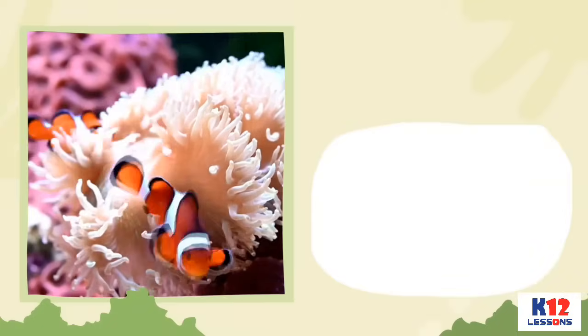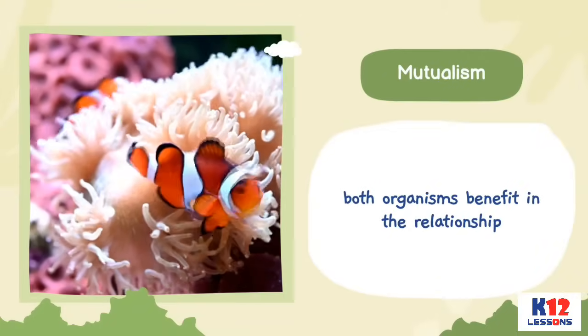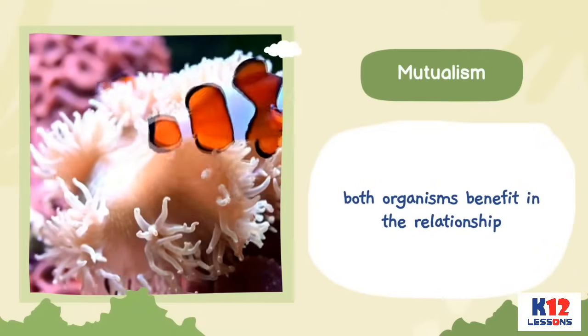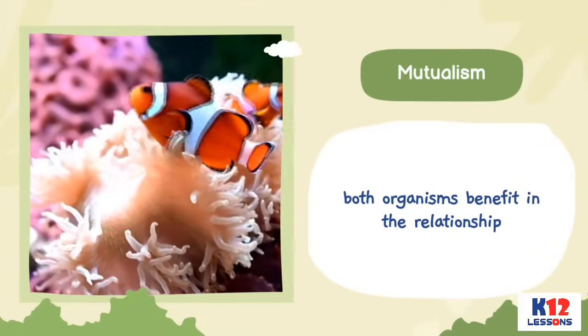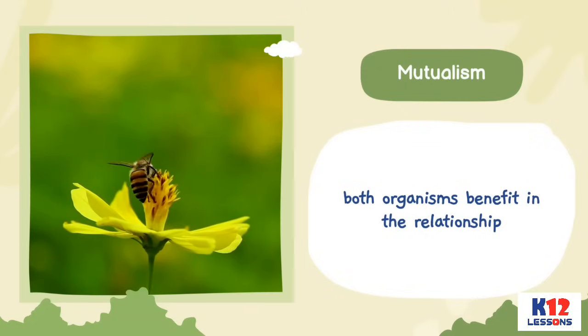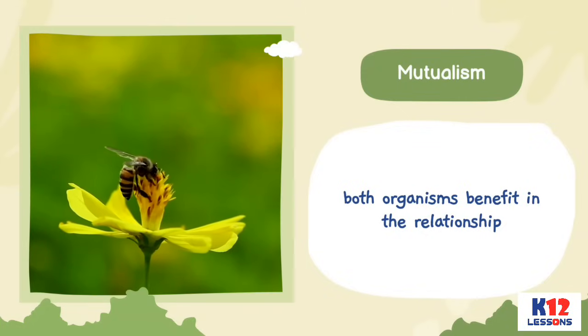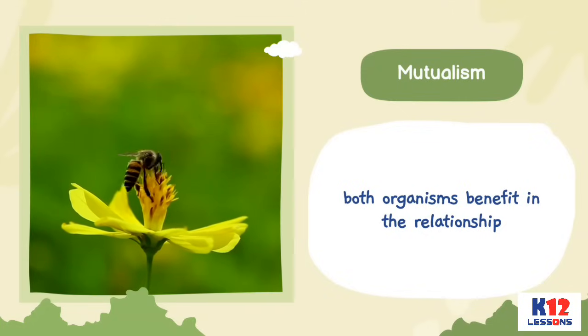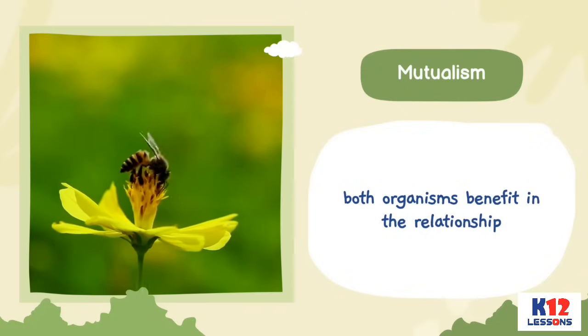In mutualism, both organisms benefit in the relationship. For example, a bee or butterfly sucks nectar from a flower and the flower reproduces.